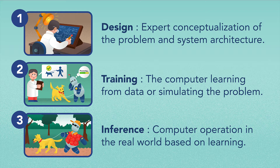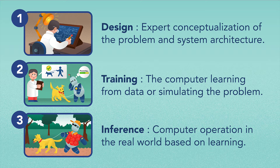As system architects, it's important to distinguish between the following phases: Phase one — Design: expert conceptualization of the problem and system architecture. Phase two — Training: the computer operation and learning from data or simulating the problem. Phase three — Inference: computer operation in the real world based on learning.